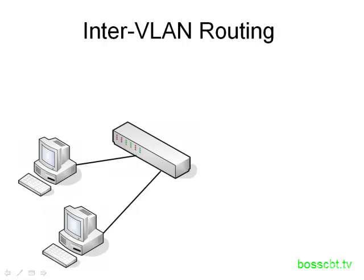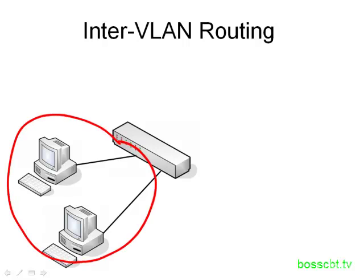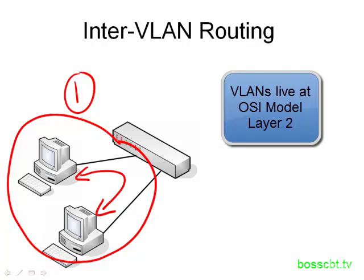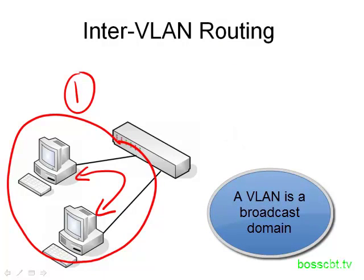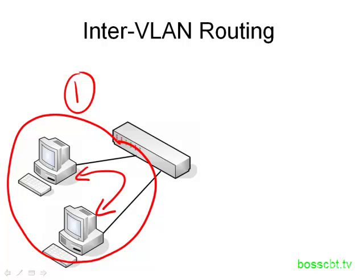Here we have two PCs and they are in the same VLAN - VLAN number one. The expected behavior is these two PCs can send and receive frames to each other all day long, because we're talking about layer two of the OSI model. A VLAN is a broadcast domain and you can talk to everybody in your broadcast domain. However, you cannot talk to people outside of your broadcast domain, outside of your VLAN.